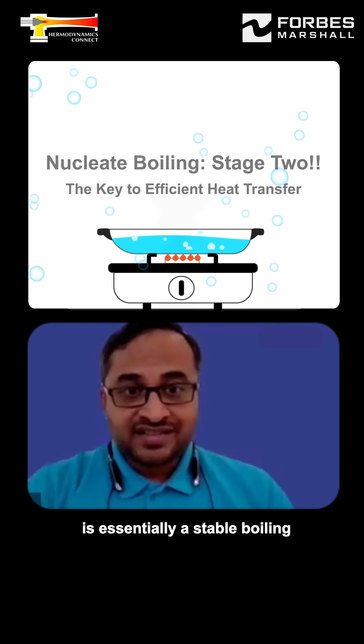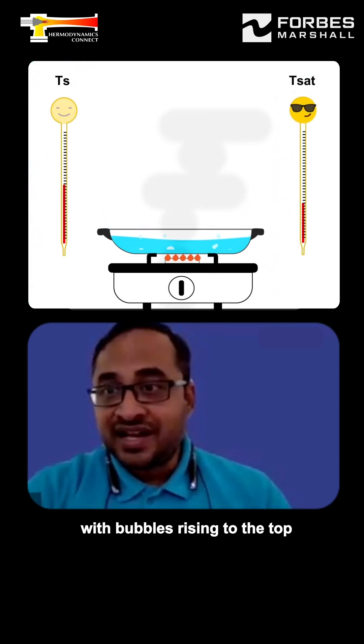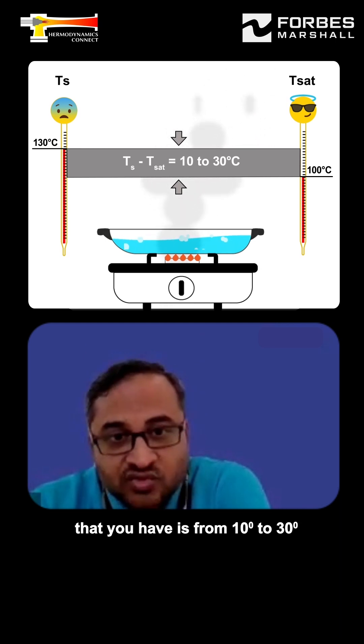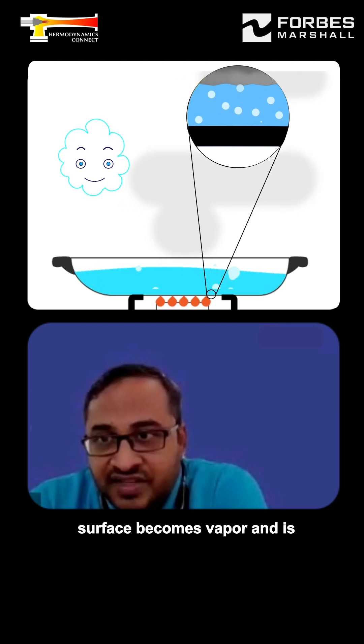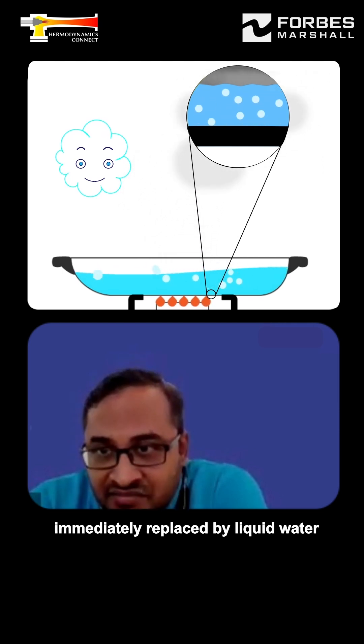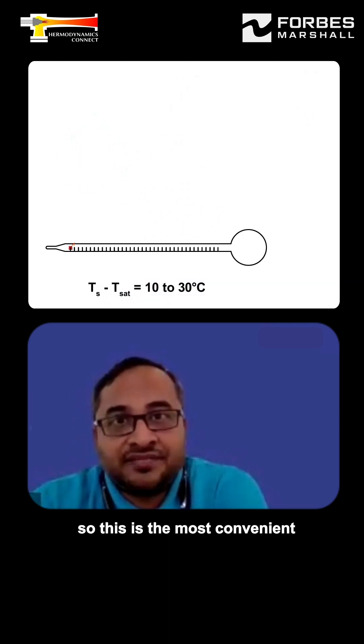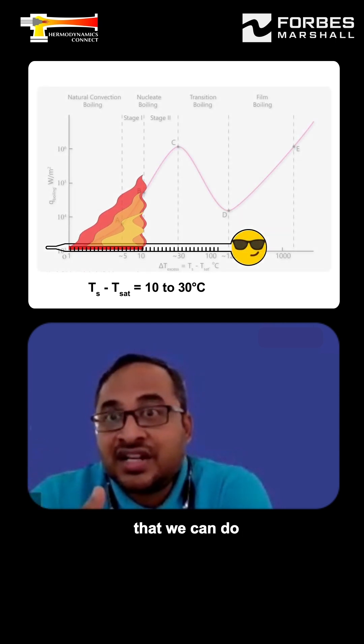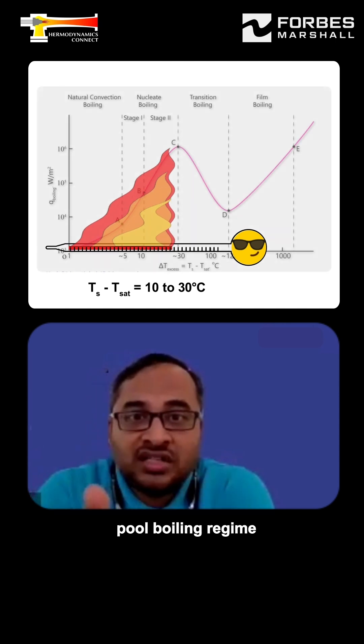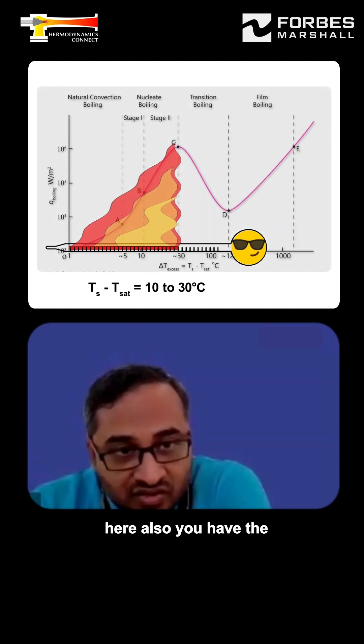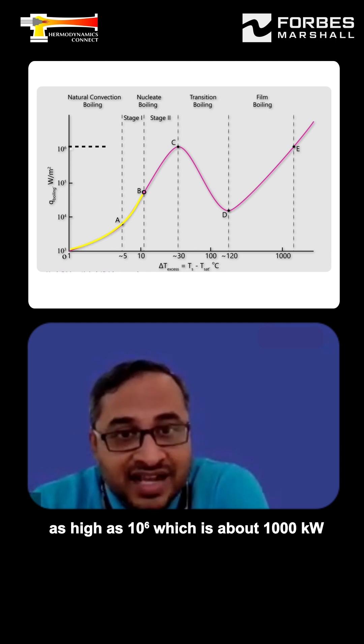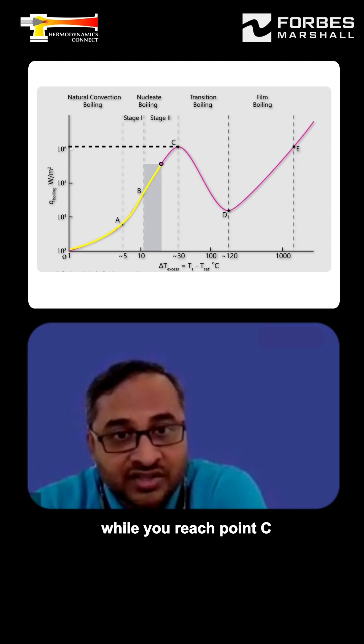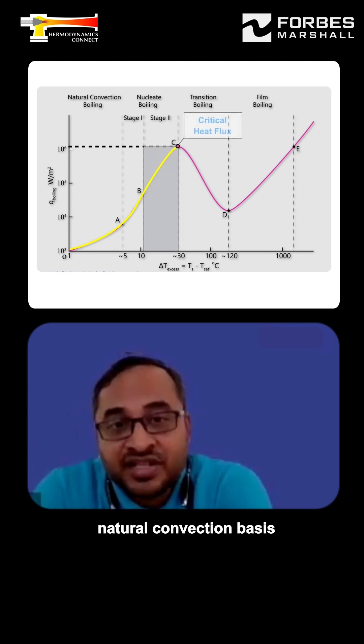Stage 2 is essentially a stable boiling with bubbles rising to the top. And the temperature difference that you have is from 10 degrees to 30 degrees. Liquid water touches the surface, becomes vapor and is immediately replaced by liquid water again. This is the most convenient, most effective form of heat transfer that we can do when it comes to a pool boiling regime. Here also you have the maximum heat transfer rate, as high as 10 raise to 6, which is about a thousand kilowatts, while you reach point C. It's happening on natural convection basis.